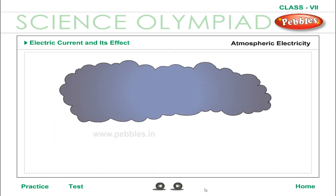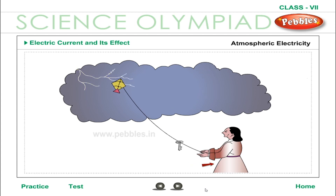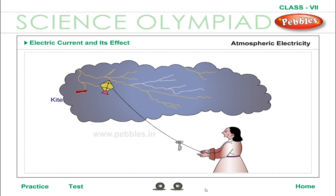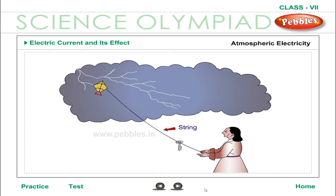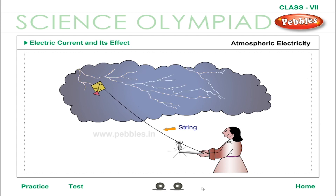Atmospheric electricity: due to friction between the wind and clouds, clouds get electrically charged. An American scientist, Benjamin Franklin, showed that clouds have electrical charges. For this purpose, he flew a kite in a thunderstorm and tied a key near the end of the string. He found that electricity from the clouds flowed through the wet string to produce sparks on the key when it was touched by a metal rod.